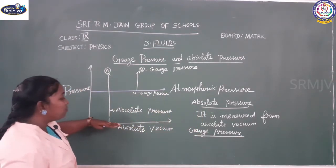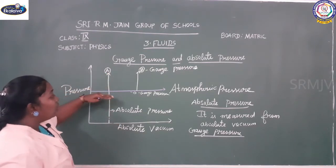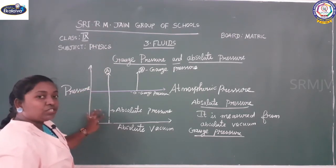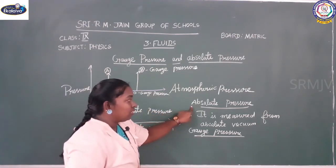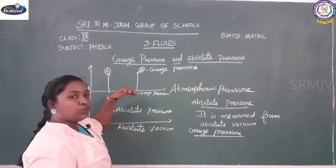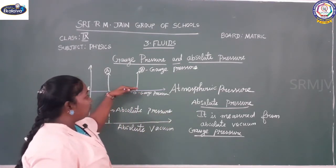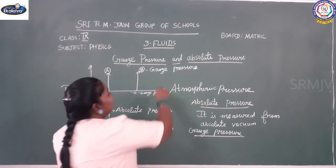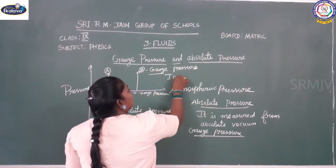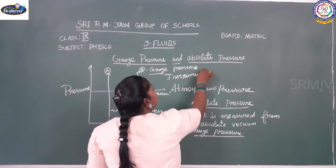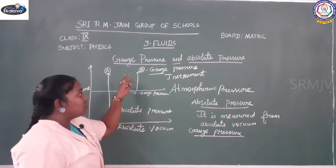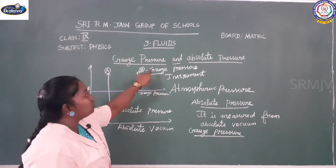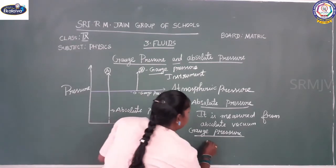Absolute pressure is measured from absolute vacuum and gives the value above the atmospheric pressure. Gauge pressure shows the value or reading above the atmospheric pressure. Gauge means it is measured using an instrument — by using an instrument to find a measurement, that is called gauge pressure.